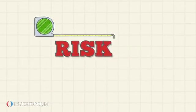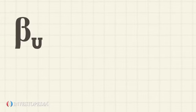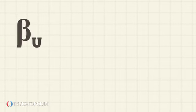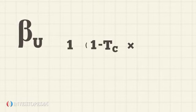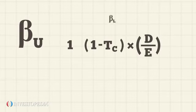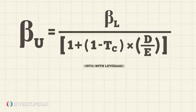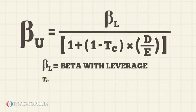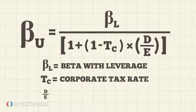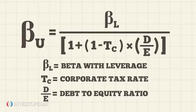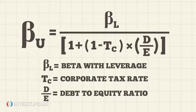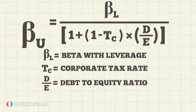To calculate a company's unlevered beta, the following formula can be used: divide the company's leveraged beta by 1 plus 1 minus the corporate tax rate multiplied by the company's debt-to-equity ratio.